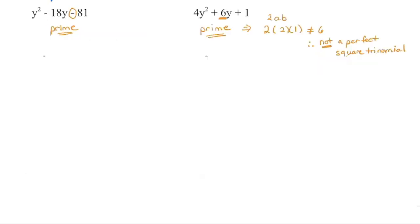Neither of the next two examples are perfect square trinomials. In the first, the constant term must be positive — it's not. There are no two numbers that multiply to negative 81 and add to negative 18, so this is a prime polynomial. In the second, there is no greatest common factor, and there are no two numbers that multiply to 4 and add to 6. This is also a prime polynomial — even though the first and last terms are perfect squares, the middle term doesn't match: square root 2y gives 2y, square root 1 gives 1, so 2 times 1 doubled is 4, not 6.